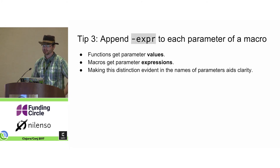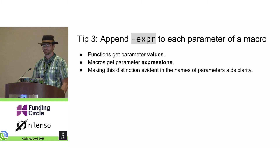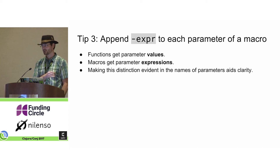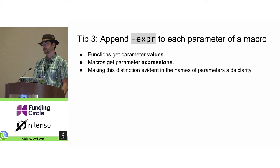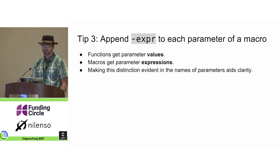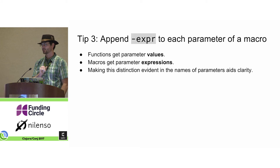Tip three: append "expression" to each parameter of a macro. The real key distinction to keep in mind about macros as opposed to functions is that functions get parameter values after they've been evaluated, but macros get them before evaluation — in other words, macros get the expressions. So having that visible in the name of the parameters of your macro really aids clarity as you're writing the macro.